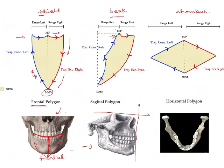That is the most retruded position the mandible can go to — that is actually the centric relation of your mandible. But because of teeth, we do not have centric relation coinciding with centric occlusion. In maximum intercuspation, teeth are at MIP. As you go ahead, there will be some incisal overlap, so the lower anteriors will glide over the upper anteriors in this path.